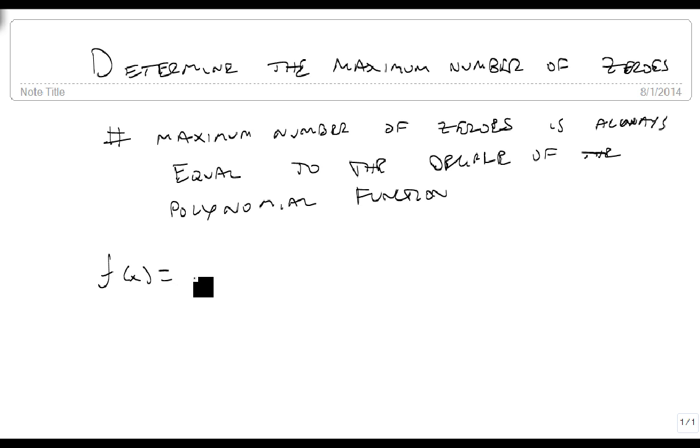Suppose we have the function f(x) = -x^4 + 6x^3 - 9x^2. What we do is we look at the degree. This is degree four, so this means there are a maximum of four zeros for this function.